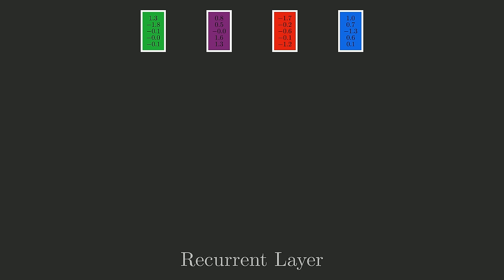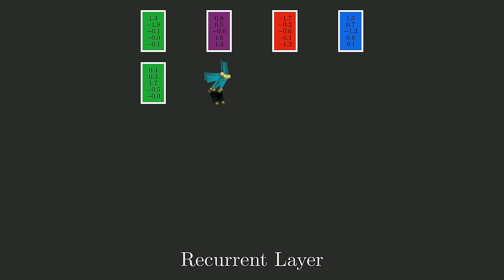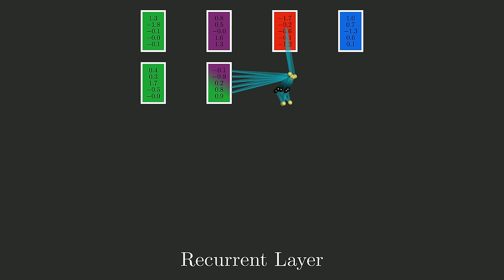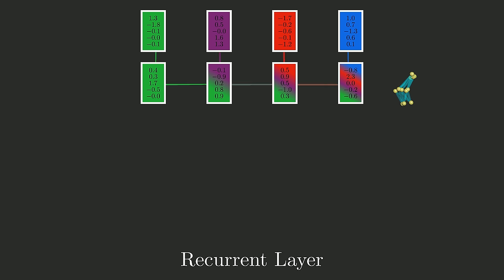Recurrent neural nets take a completely different approach to improving convolutional layers. Instead of applying the neural net to two consecutive input vectors, you apply it to one input vector and the previous output of the neural net. Each output vector now contains information from all of the input vectors prior to it, instead of only one previous vector. This final output vector contains information from every vector in the input, no matter how many there are — and we have not used any more compute than a convolutional layer. We've managed to incorporate long-range information for free.